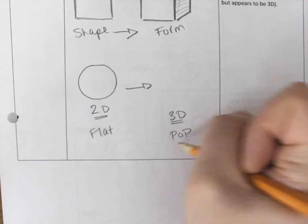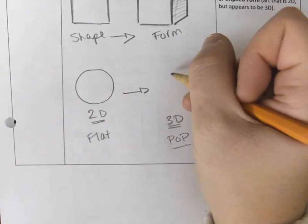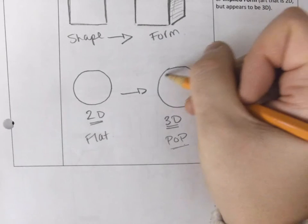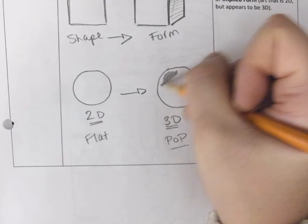So looking like it's going to pop off the page or realistic, by making that circle with a little bit of shading on it.